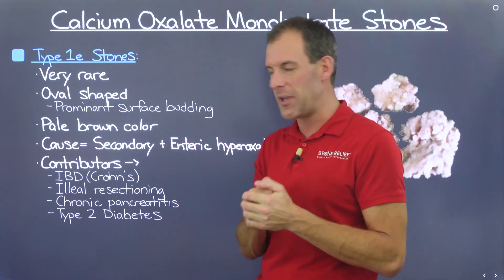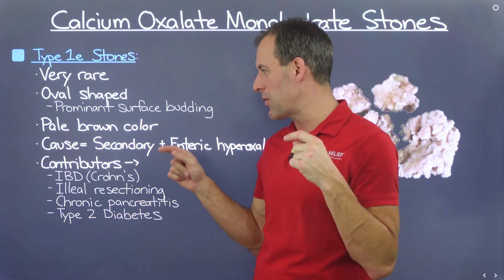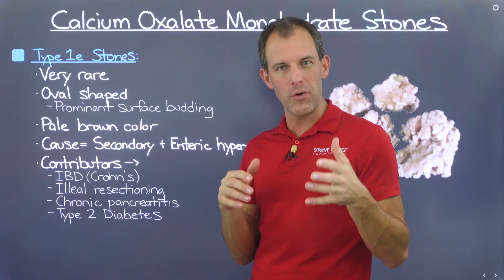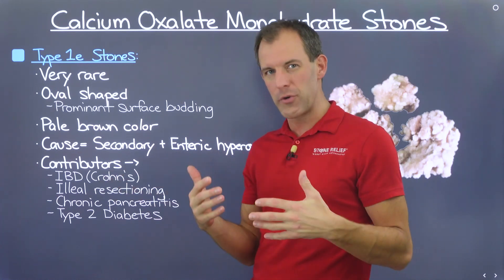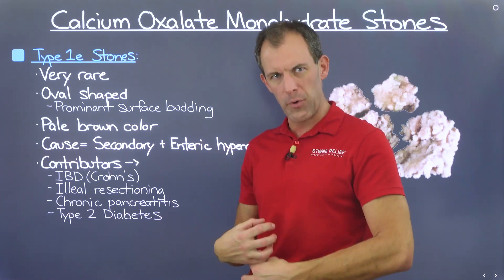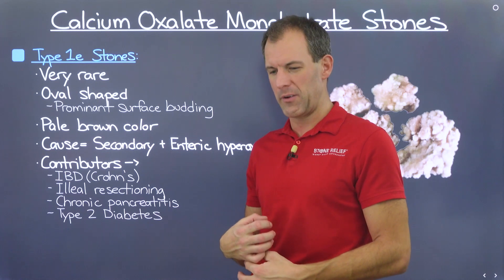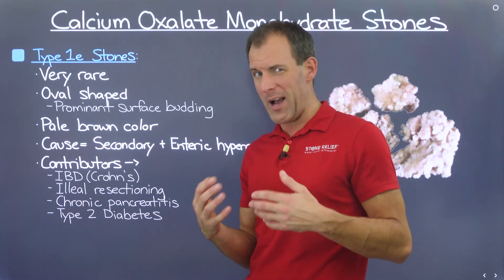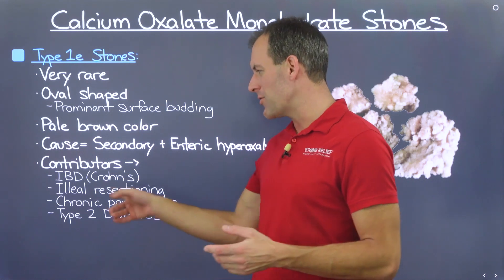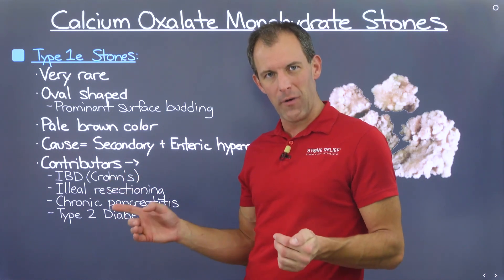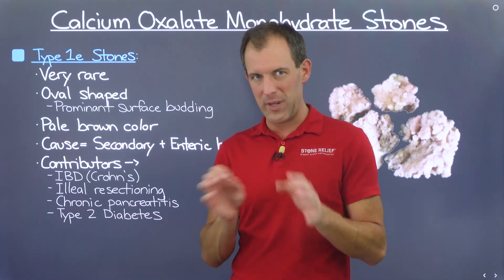There's something going on digestively. In particular, people with IBD or Crohn's typically see these types of stones. If you've had a portion of your digestive tract removed — like an ileal resectioning — this is also going to affect your body's ability to process foods and absorb nutrients, impacting oxalate absorption. Additionally, chronic pancreatitis can be involved, and lastly, type 2 diabetes is also a piece of this puzzle.